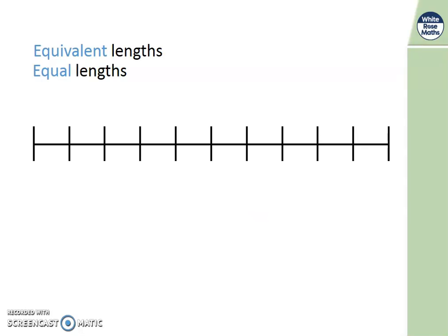Here we've got a double sided number line. And it begins at 0. We're going to count along in hundreds. Do it along with me. 0, 100, 200, 300, 400, 500, 600, 700, 800, 900. What's next? 1,000. Well done.